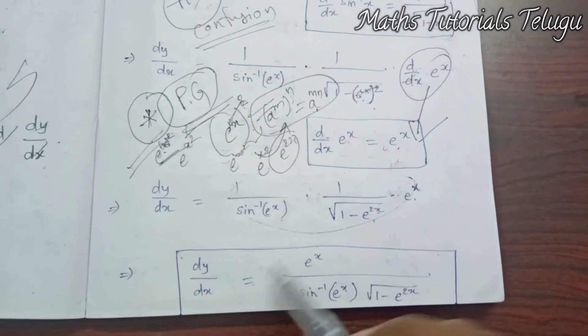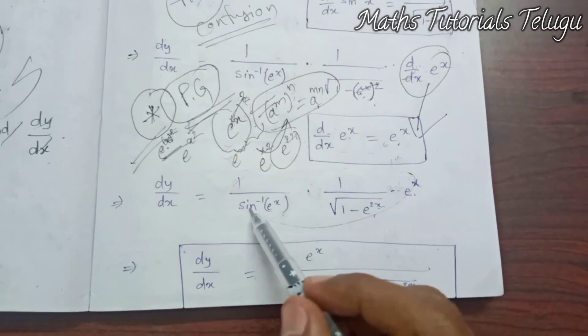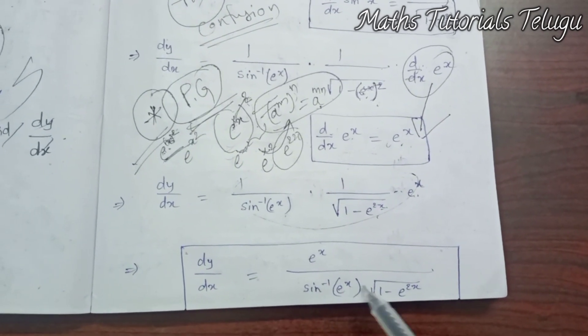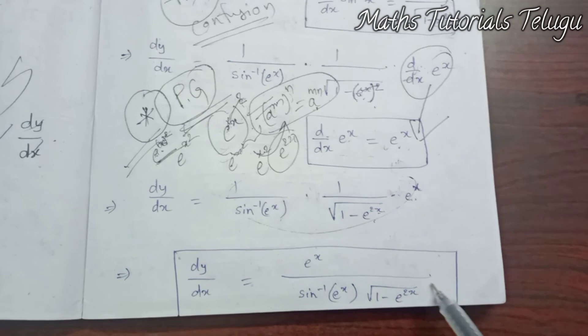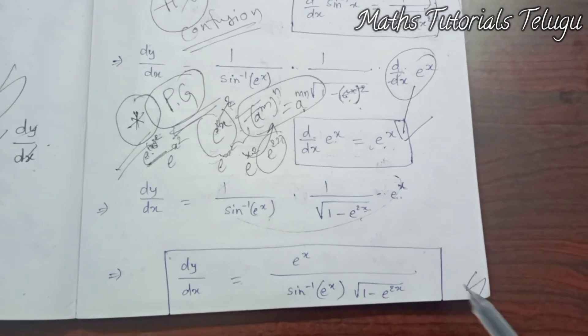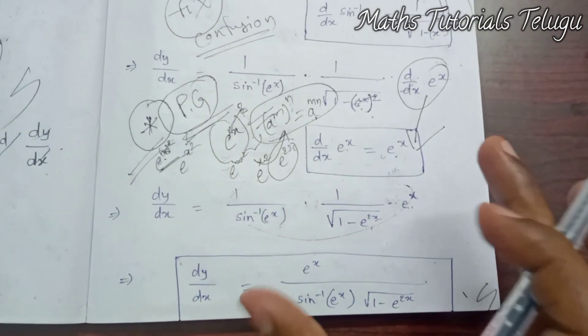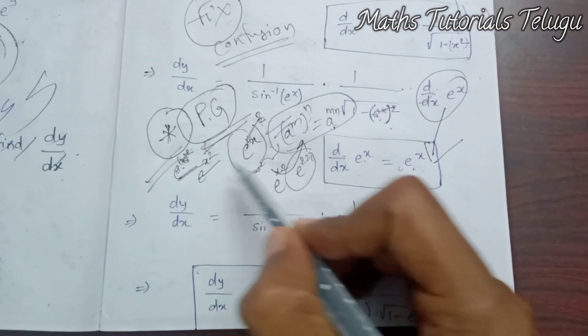So dy by dx is equal to e power x divided by sine inverse of e power x into square root of 1 minus e power 2x. And that is the final answer.